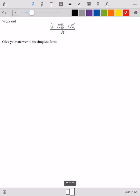So brackets. Let's multiply out two brackets first. 3 minus square root 2 multiply by 2 plus 3 square root 2.